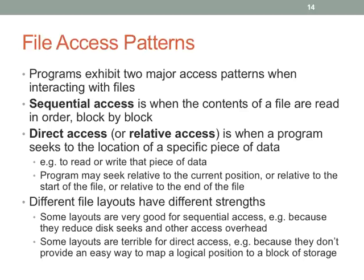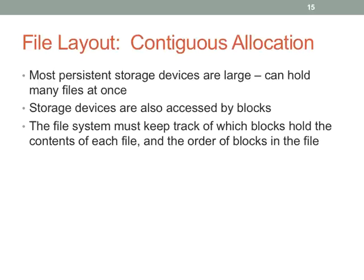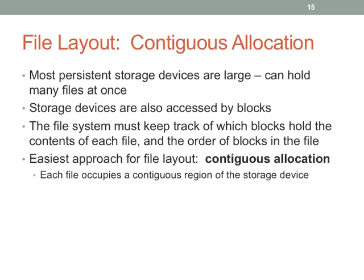For direct access, you have a logical position in the file that needs to map to a disk block — whether you have an efficient or inefficient way of doing that mapping is a characteristic of the file system data structure. Since devices are large, the file system has to track what blocks are used by what files and in what order. A really simple approach is contiguous allocation, where each file occupies a contiguous region. You only need to store where the file starts and what its size is — that's all you need to implement contiguous allocation.